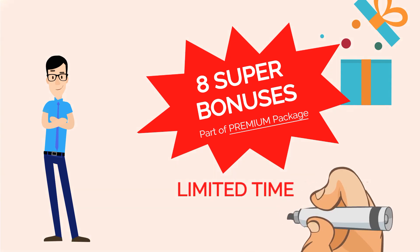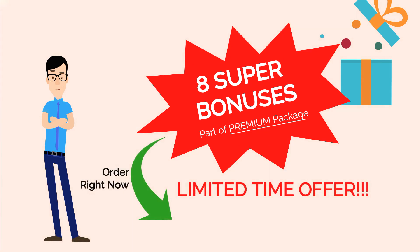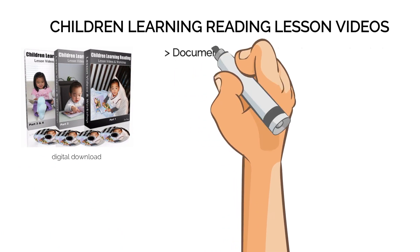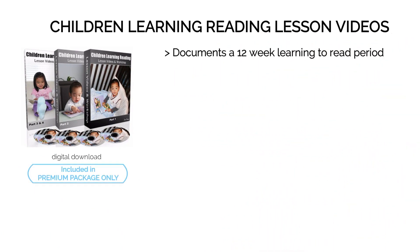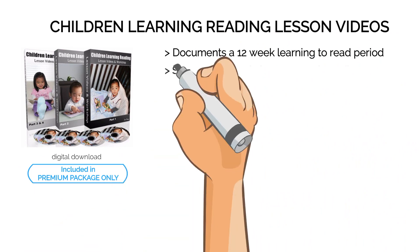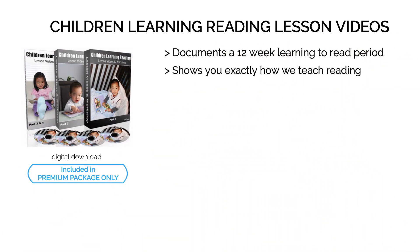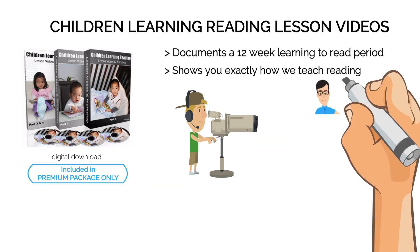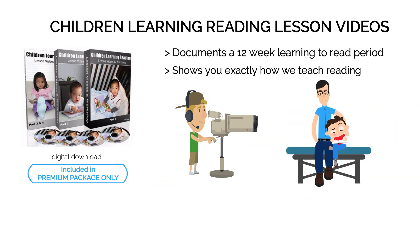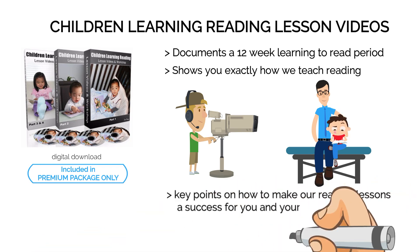However, this deal will only last a limited time. So if you order right now, you'll also receive these eight additional bonuses valued at $389.65. Children Learning Reading Lessons Videos. This is a series of videos that documents a 12-week learning to read period. We went through this with our second child, Ethan. It shows you exactly how we go about teaching our lessons that makes it not only possible, but so simple and effective to teach even a two-and-a-half-year-old toddler to read. We also include workshop sessions in the videos discussing, sharing, and highlighting critical, key points on how to make our reading lessons a success for you and your child.